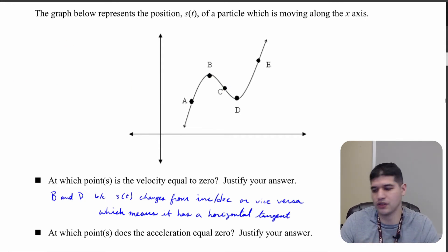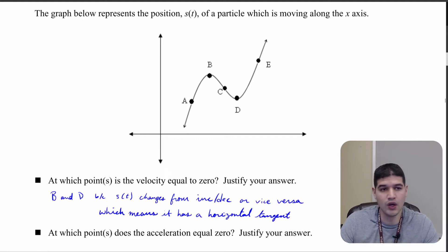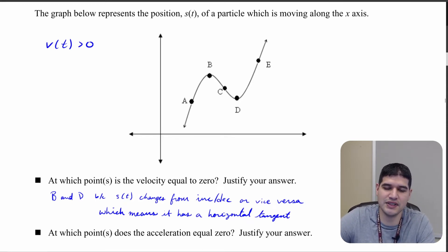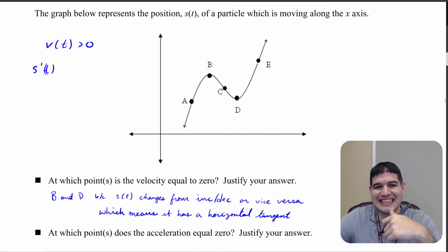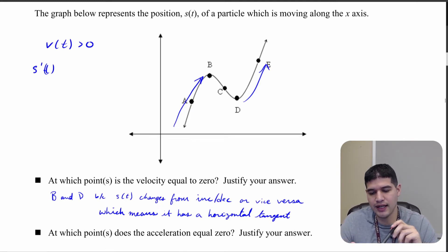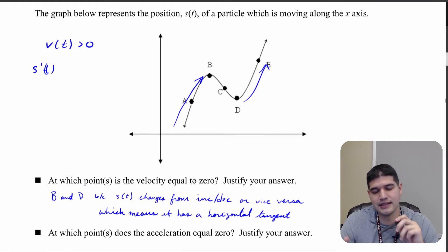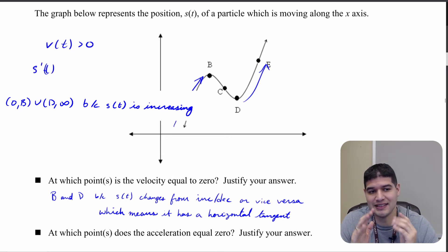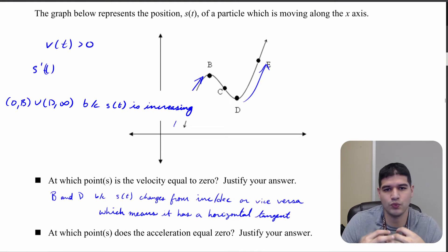Where is the velocity positive? Since s prime of t equals velocity, we're looking for where s of t is increasing — that's where the first derivative is positive. The function is increasing from the start to b, and then from d to e. Writing out the intervals, keeping in mind that time must start at zero and cannot be negative, velocity is positive on the intervals zero to b and d to infinity.